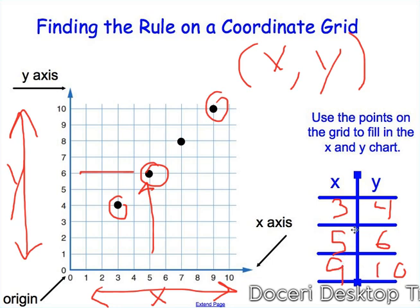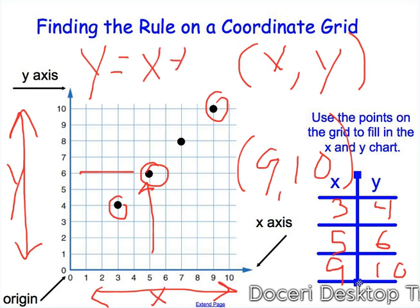Now look and see if you can find a pattern in this X, Y chart. So we've got 3, 4, 5, 6, 9, 10. Now remember that 9, 10, for example, would be written just like this when you're used to plotting your points. So I can tell now that Y is 1 bigger than X. So we would write this as Y equals X plus 1.